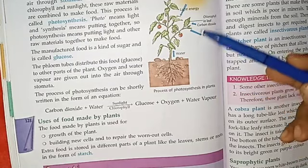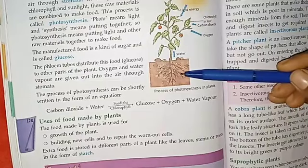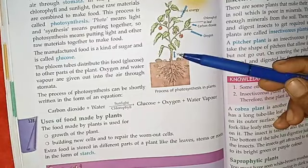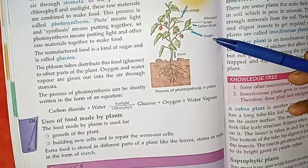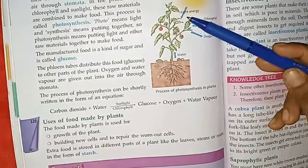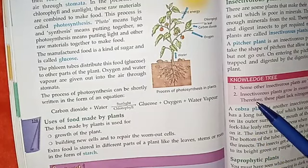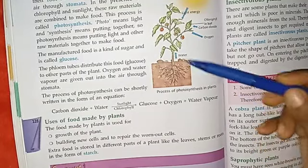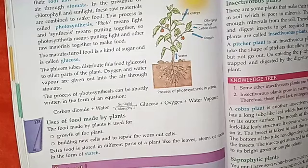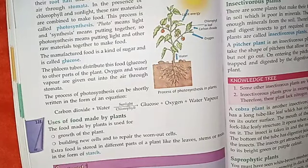There is a picture of a plant. What is the function of the roots? The roots absorb water and minerals from the soil. Now, with water and minerals absorbed, we add chlorophyll.